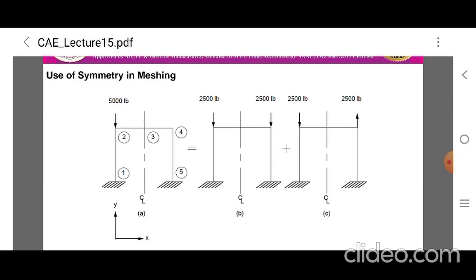Note that figure A is a case of general loading applied to a structure with a plane of symmetry. Figure B and figure C represents a symmetric loading and an anti-symmetric loading respectively applied to the same structure.